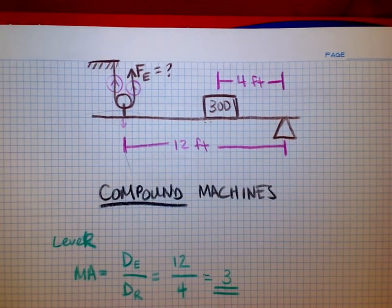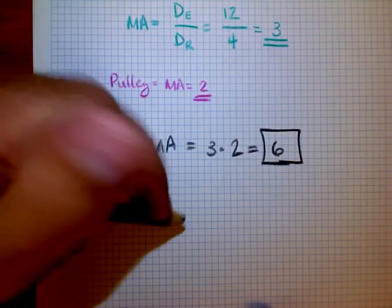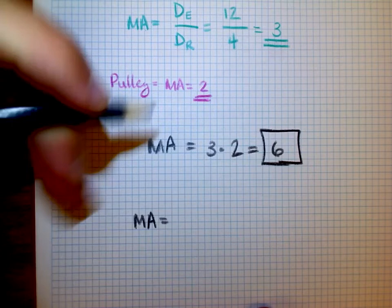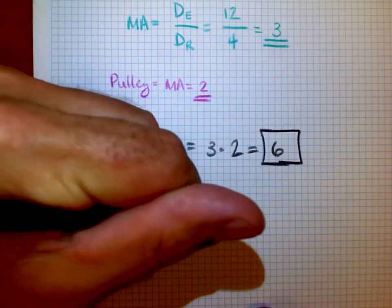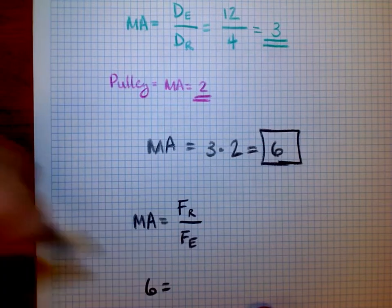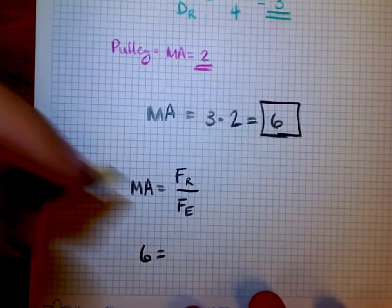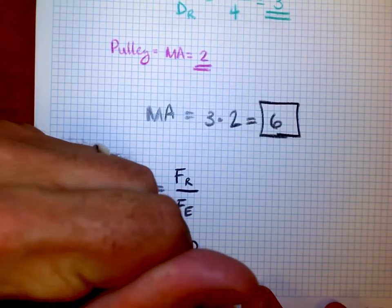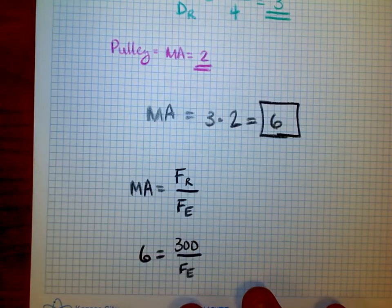What I have to do is say, well, mechanical advantage, the formula tells me how much force I was able to overcome given how much I put in. So if I have 6 for the mechanical advantage and I have a load of 300, then I need to find out the effort force.